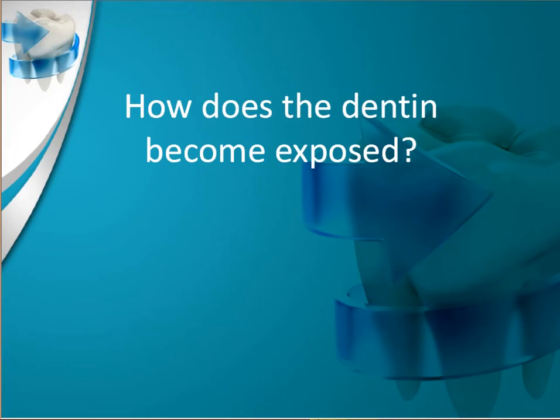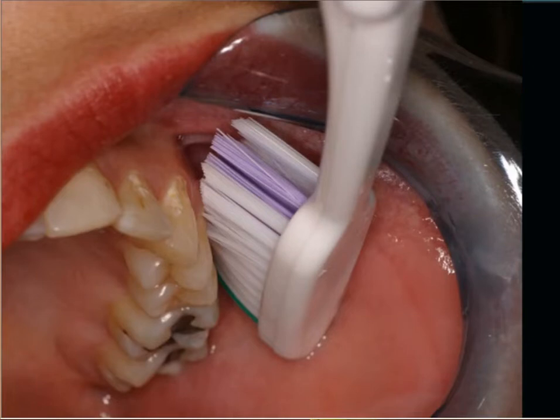How does the dentin eventually become exposed? One of the more common reasons revolves around tooth brushing. Improper brushing, such as using a scrubbing or back-and-forth motion, is a common cause for the loss of tooth structure in the cervical area. Using a hard toothbrush or abrasive substances when brushing can also cause the removal of tooth structure.